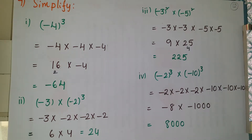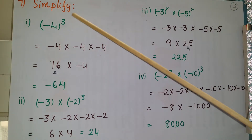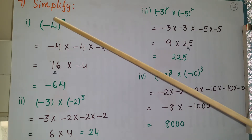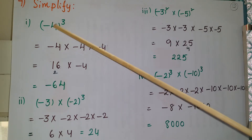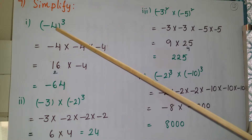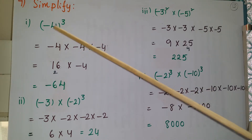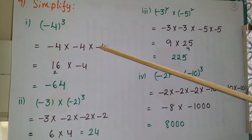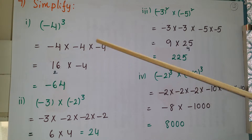This is the seventh problem from the same exercise — simplify. We have to find the values. Minus 4 whole to the whole cube: since the numbers are negative, we need to find the value of (-4)³, which means we multiply minus 4 three times: minus 4 into minus 4 into minus 4.